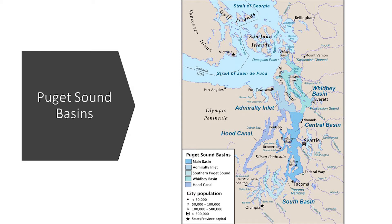The Puget Sound is made up of five distinct basins that are interconnected: Whidbey Basin, Central Basin, South Basin, Admiralty Inlet, and Hood Canal. The basins are separated by underwater shelves called sills that are about 150 feet deep. They are barriers that slow water circulation and trap pollution, reducing the flushing of water between the Puget Sound and the Pacific Ocean.